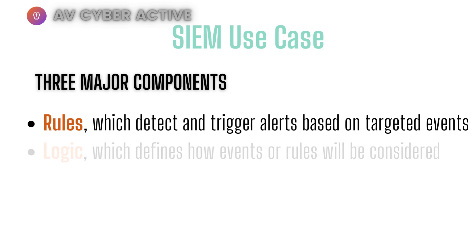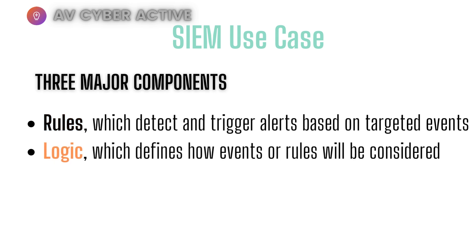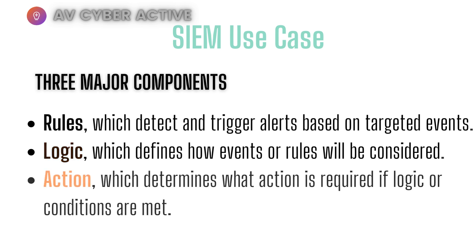The second component is the logic or the parameter. This defines how the events or the rules will be triggered or considered — expressed as a number of events or a duration of time. The last one is the action, which is what you see in your dashboard. This determines where action is required if the logic or conditions are met.